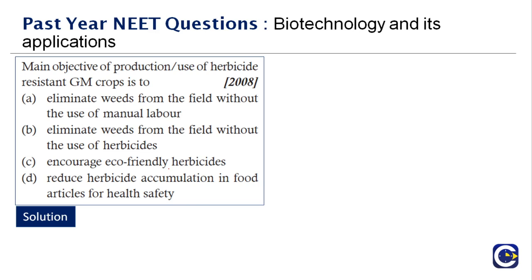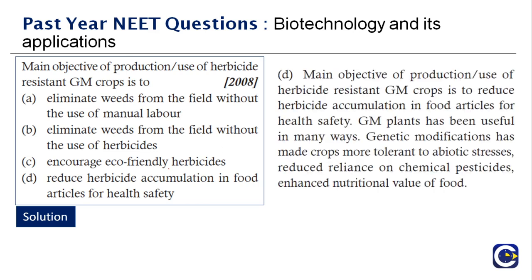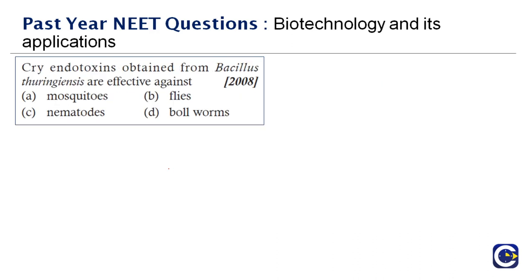GM plants have been useful in many ways: genetic modification has made crops more tolerant to abiotic stresses, reduced reliance on chemical pesticides, and enhanced nutritional value of food. This is why GM crops came into use. Therefore the right answer is option D.